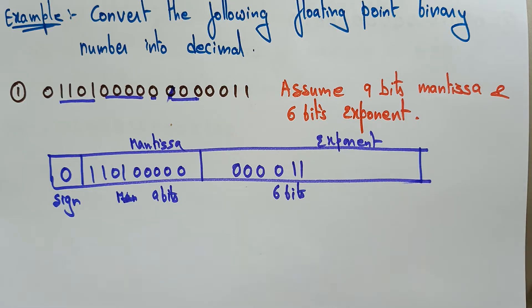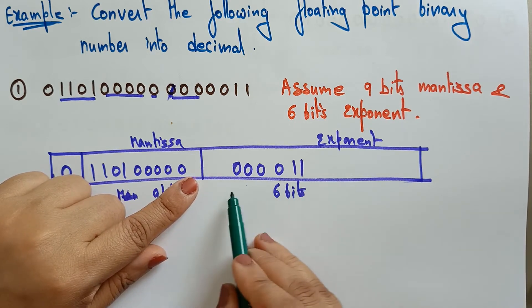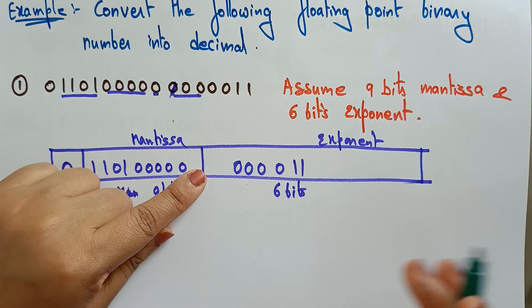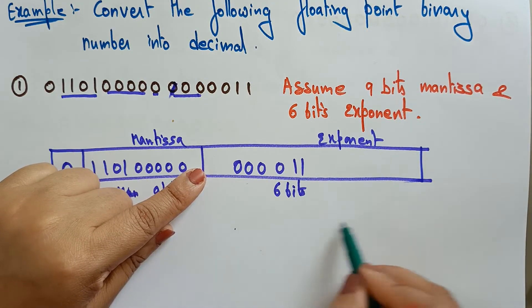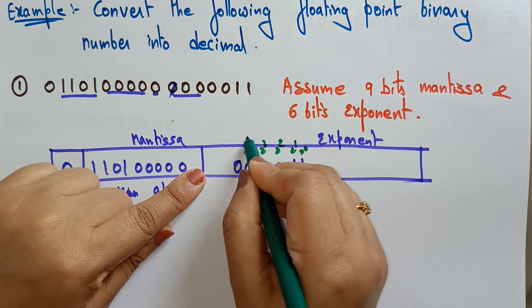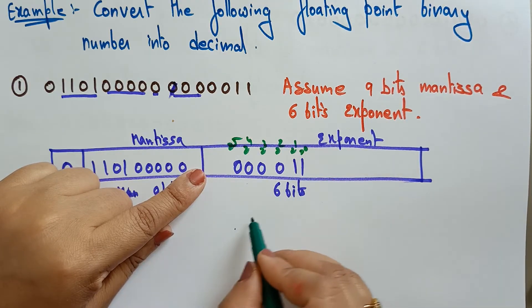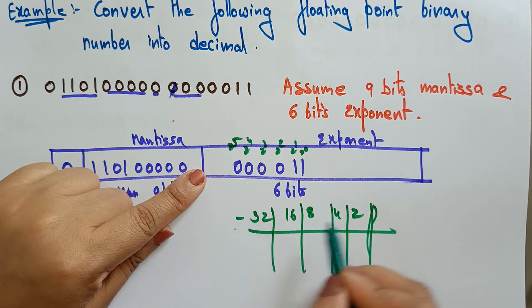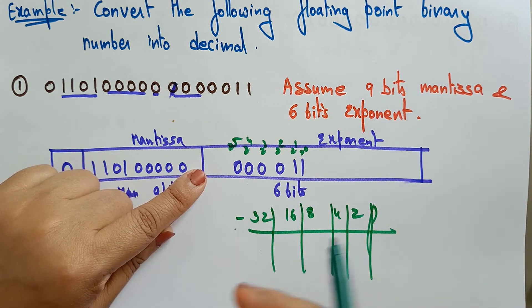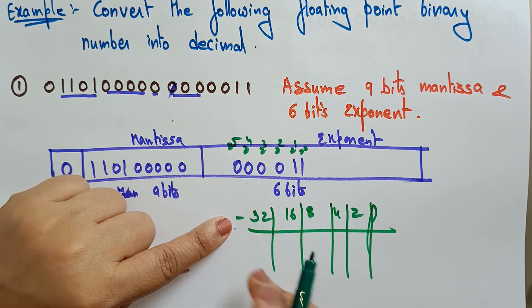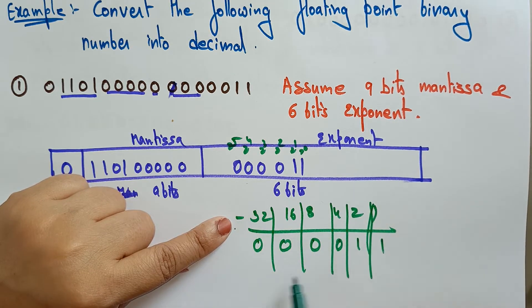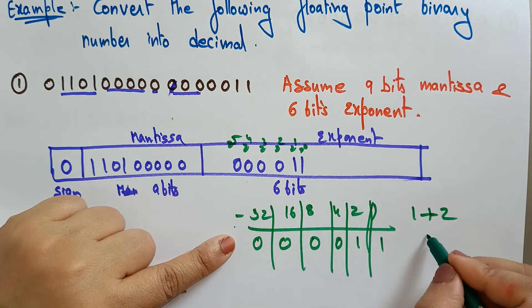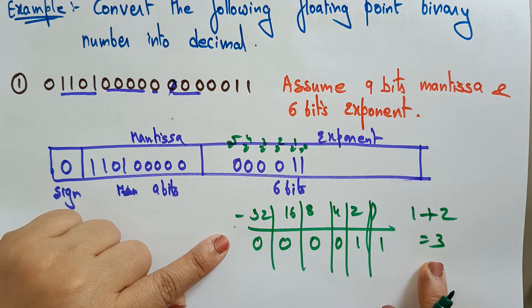Now, convert this into decimal. First, work on the exponent: convert the six-bit binary exponent into decimal. The bit positions are 2⁵, 2⁴, 2³, 2², 2¹, 2⁰ — that is 32, 16, 8, 4, 2, 1. Always take the most significant bit as negative: if it is one you get a negative exponent, if zero a positive exponent. Here the exponent bits are 0 0 0 0 1 1, giving 2+1 = 3.